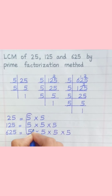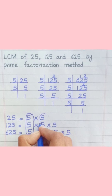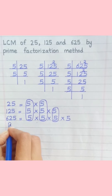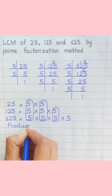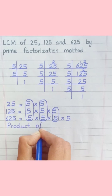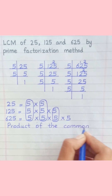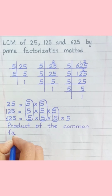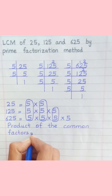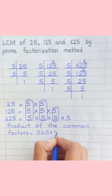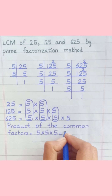Loop the factors that are common to all of the given numbers. Product of the common factors equals 5 multiply 5 multiply 5, which equals 125.